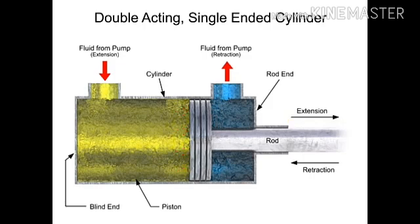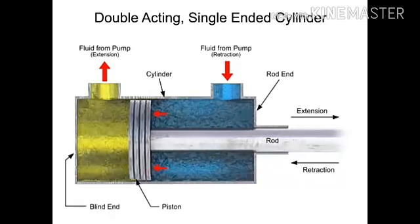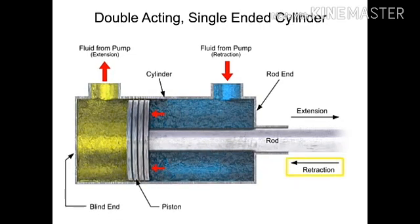When the directional control valve is shifted, it sends fluid into the rod end port, out of the blind end port, and back to the tank. Pressure builds up and generates a force on the other side of the piston, causing the retraction stroke.